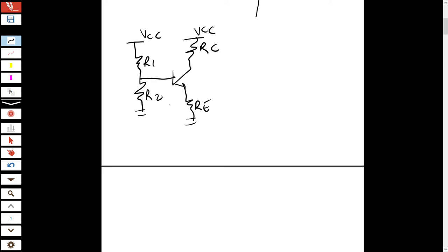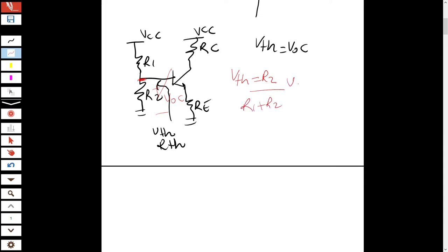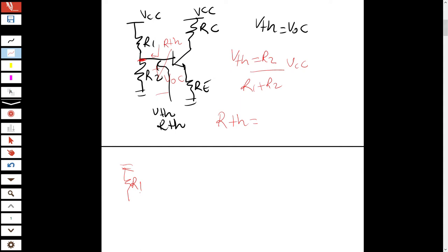Remember from the common emitter case — we look at the base network and write the Thevenin equivalent: V_Thevenin equals V_open_circuit. With the connection cut, the voltage we see is the voltage divider voltage, so V_Thevenin = (R2 / (R1 + R2)) × VCC. For R_Thevenin, we shut down independent DC sources.